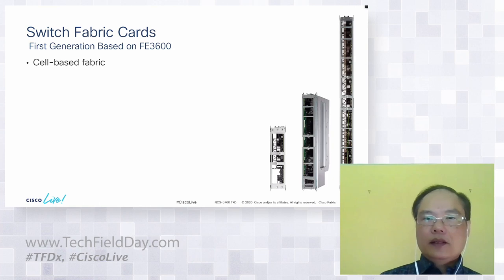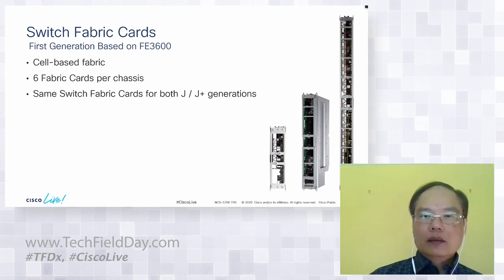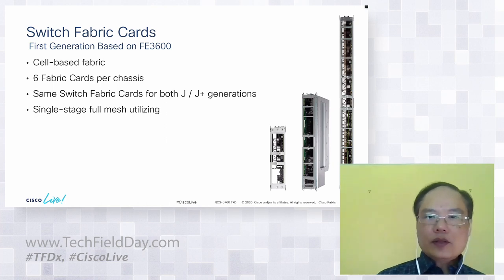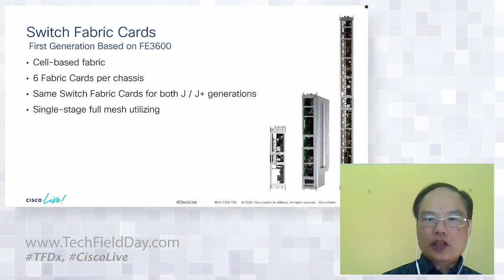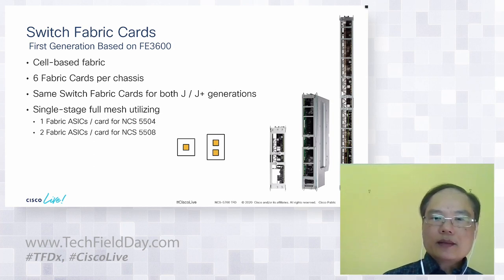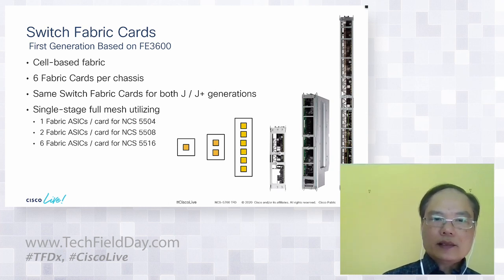The first generation fabric card is based on the Broadcom AE3600 fabric chip. It is a cell-based fabric requiring six fabric cards per chassis for full capacity and redundancy. It supports line cards based on both Jericho and Jericho Plus. It is a single-stage fabric providing full mesh connections to all NPUs on all line cards on the chassis. Just one fabric ASIC for the four-slot chassis, two ASICs for the eight-slot chassis, and six ASICs for the 16-slot chassis.